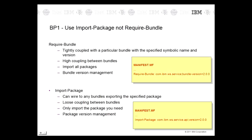The use of Require Bundle is discouraged because it makes your bundles tightly coupled. All the packages exported by the required bundle are made available to the client bundle, and as the client bundle is developed over time, it might start to depend on these other packages. The bundle providing the package can no longer be replaced by a different one with a different symbolic name without making changes to the client bundle. Using Import Package enables the OSGI framework to wire to any bundles exporting the specified package, enabling loose coupling between bundles. Only import the packages you need.